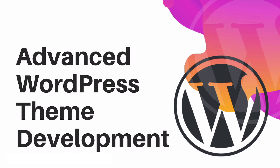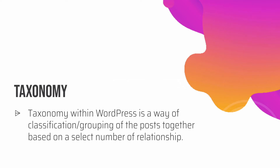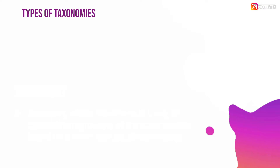So what are these taxonomies? Taxonomies within WordPress is a way of classification or grouping of posts together based on a select number of relationships. So basically if you have lots and lots of posts available and you want to group them together in terms of like categories etc., you can classify them with the help of taxonomies.